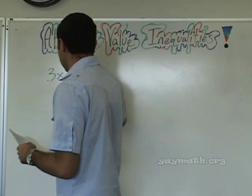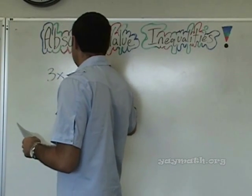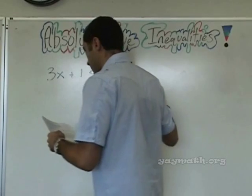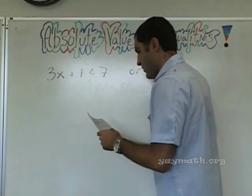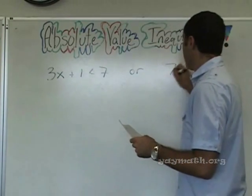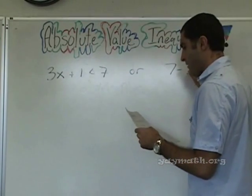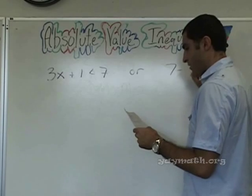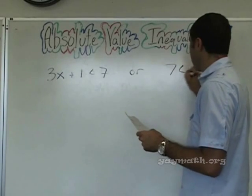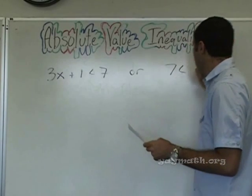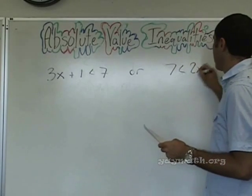3x plus 1 less than 7, or 7 is less than 2x minus 9.